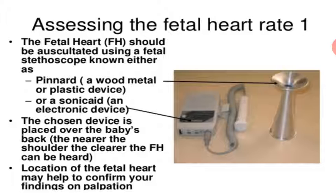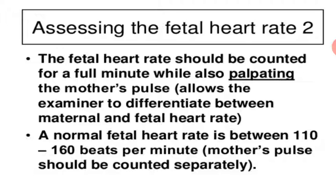Assessing fetal heart rate: use a fetal stethoscope known as a Pinard — a wooden, metal, or plastic device. The device is placed on the baby's back near the shoulder. The fetal heart rate should be auscultated for a full minute while also palpating the mother's pulse simultaneously. The normal fetal heart rate is between 110 to 160 beats per minute. The location of the fetal heart may help to confirm your findings on palpation.